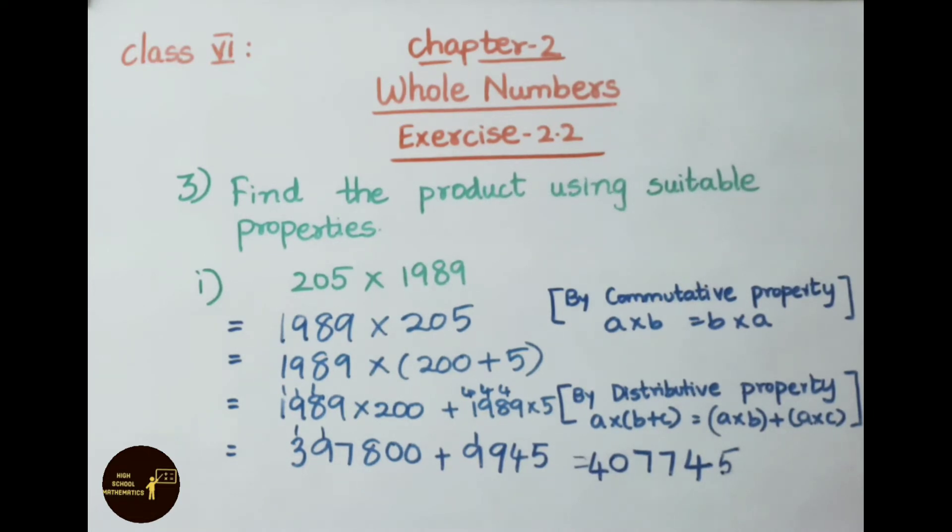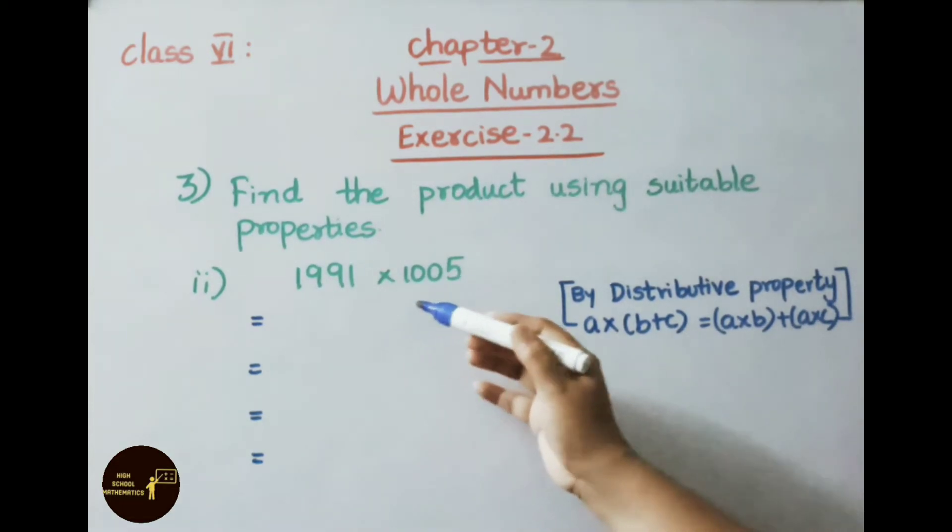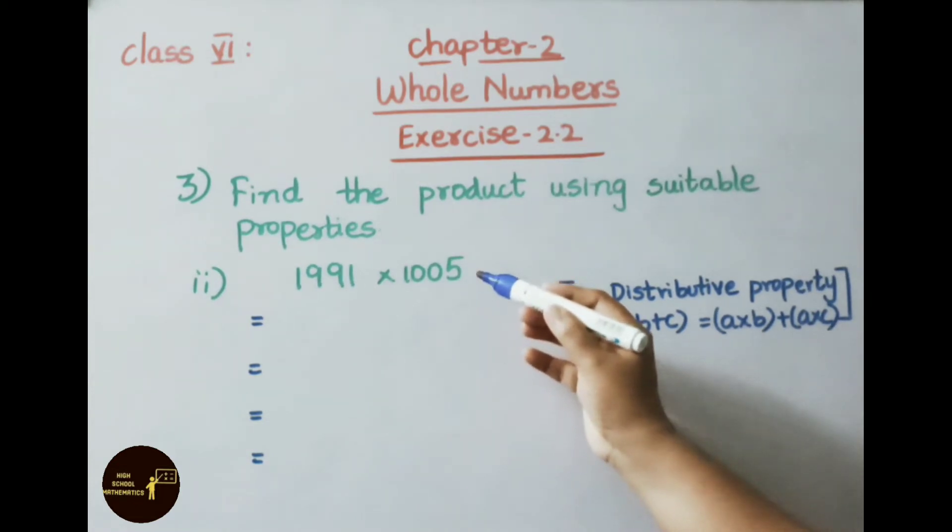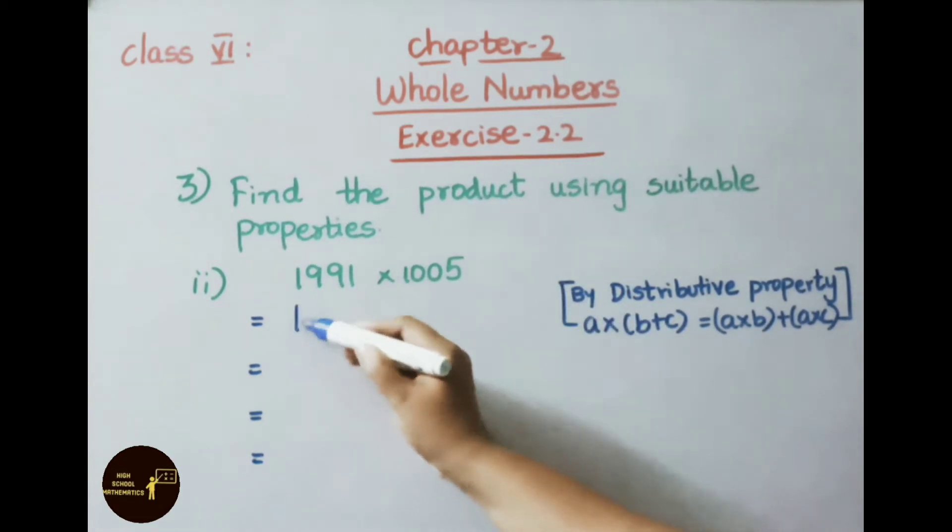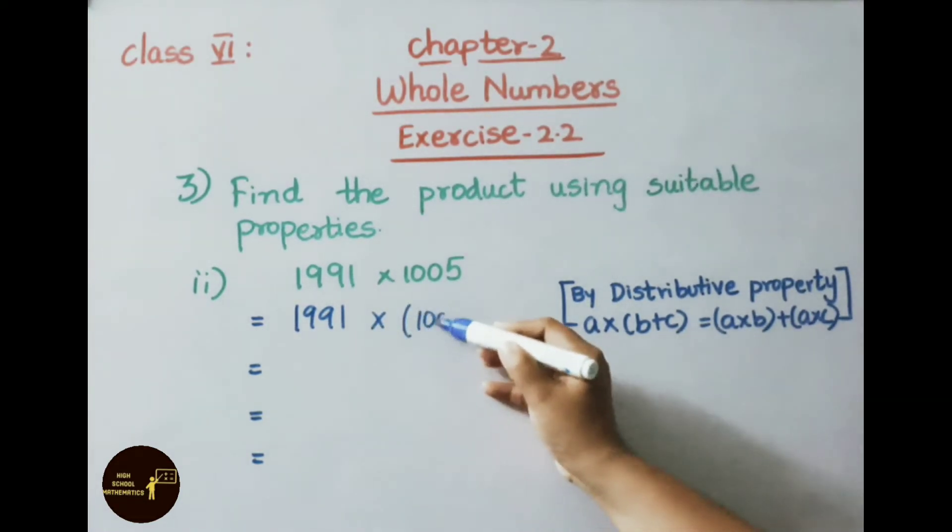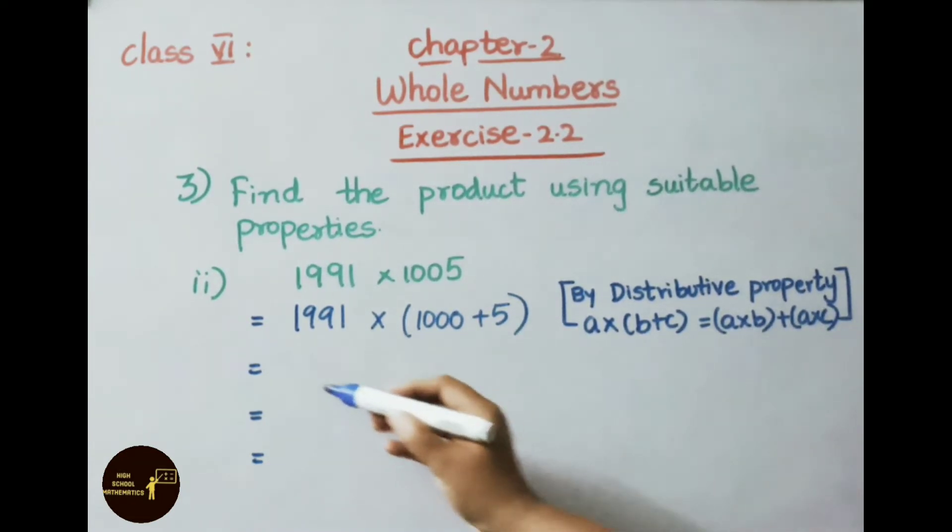Now let us see second sum. 1991 into 1005. 1005 can be written as 1000 plus 5. Let us write down 1991 into 1000 plus 5. Now this is looking like distributive property, a into b plus c. This can be written as a into b plus a into c. Let us write down 1991 into 1000 plus 1991 into 5.